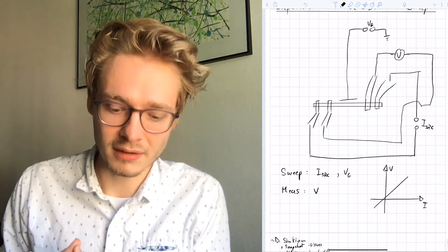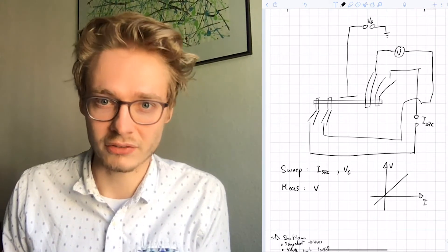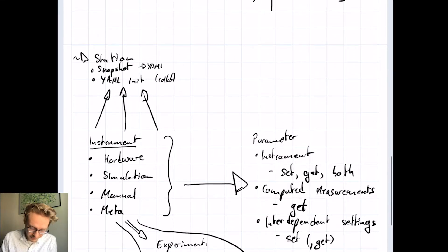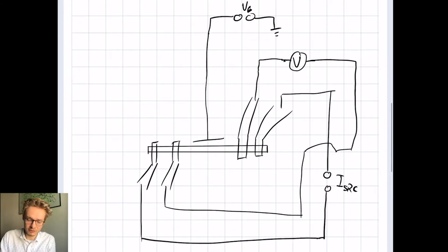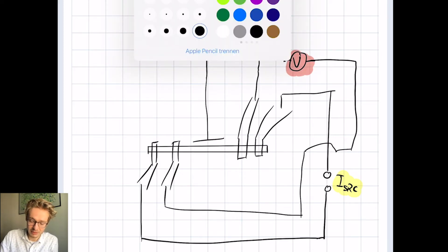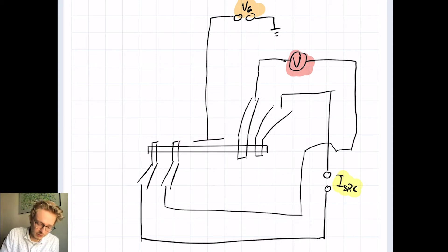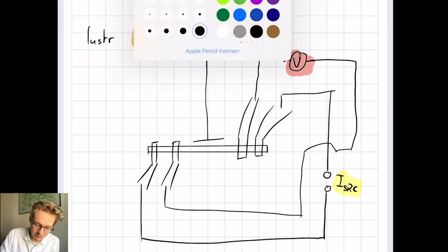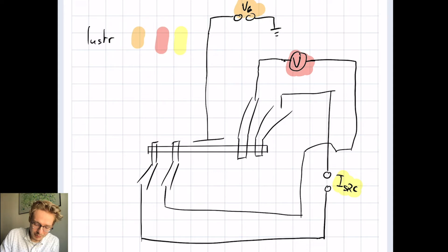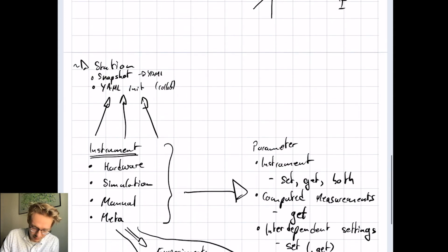This is how the QCodes software infrastructure comes into place. First of all, we start with the instruments. The instruments are, as you can see in the sketch, the different instruments we marked here — we have a current source, a voltage source, and possibly a top gate. These instruments group up and become a so-called station, where different instruments are grouped together.